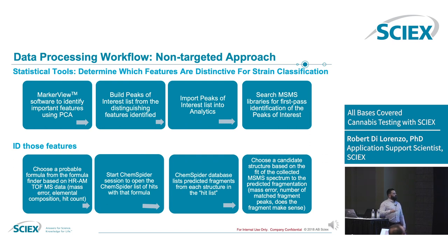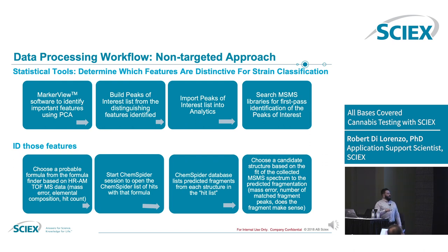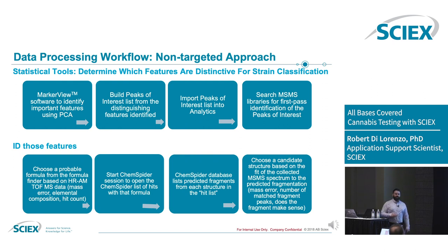From probable formulas — in cases where you can't find MS/MS library hits — you can find probable formulas based on high-res accurate mass, search databases like ChemSpider which will propose formulas, maybe predict fragmentation patterns, and then choose candidates and go back to reinterrogate to find potential structures for things that maybe nobody's ever seen before.